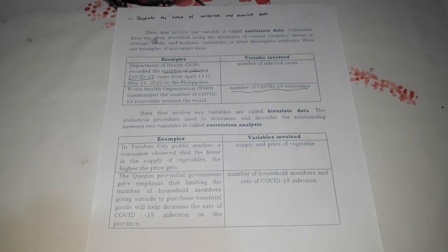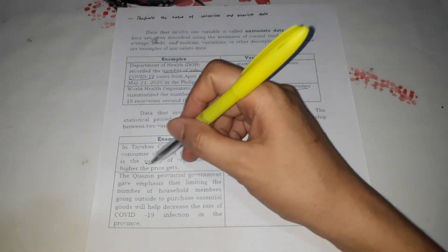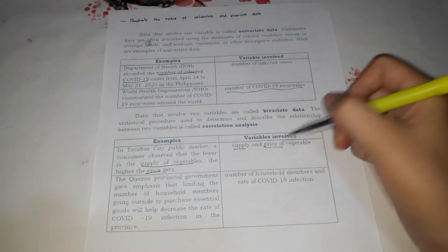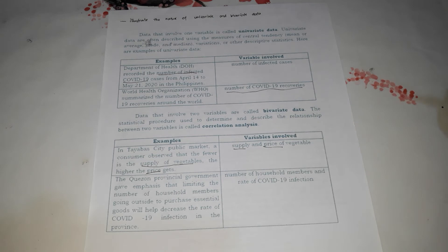An example of bivariate data: in a public market, a consumer observed that the fewer the supply of vegetables, the higher the prices get. The two variables being compared are the supply of vegetables and the price of vegetables. There are two variables, therefore it is bivariate data.